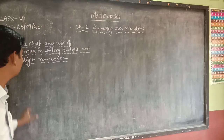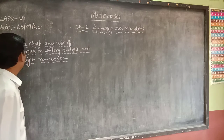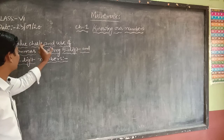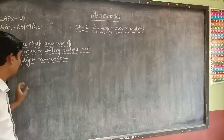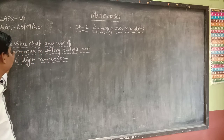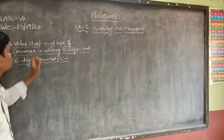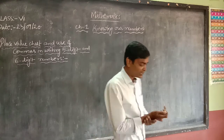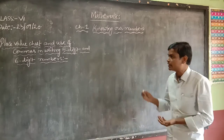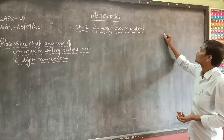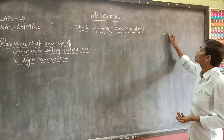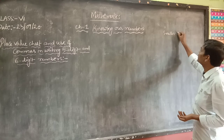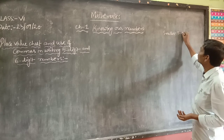Children, let us learn place value chart and use of commas. In the previous classes, we studied the smallest three-digit number.